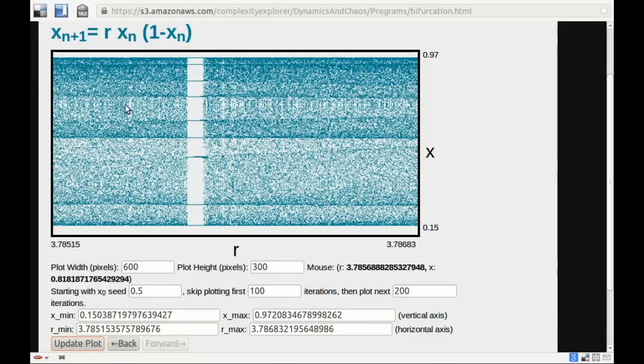So we have these chaotic regions of parameter values, but they're interrupted every now and again by these periodic windows.